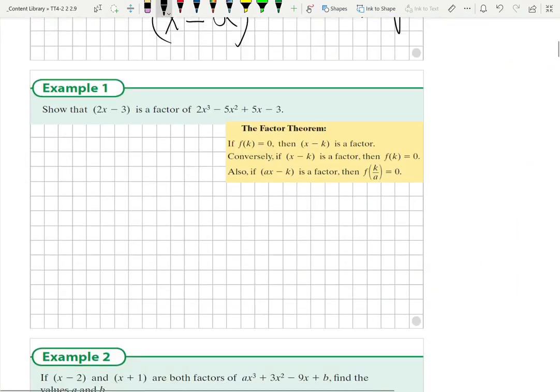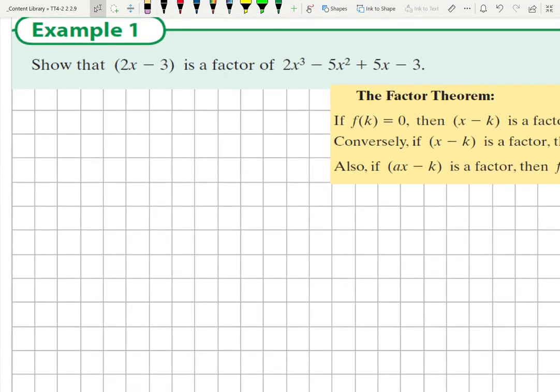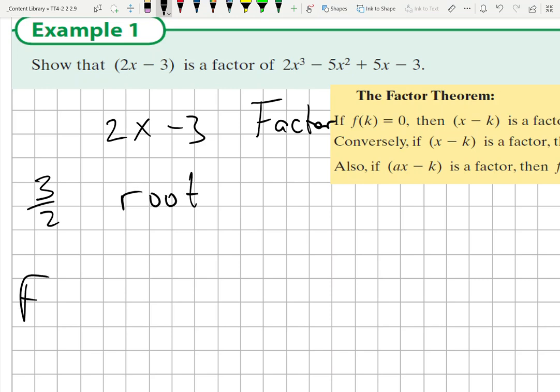They start off with a sort of tough example here. If 2x minus 3 - well, they're giving it, show that 2x minus 3 is the factor. Then 3 over 2 is the root, and we're going to prove it here by showing f of 3 over 2, and we'll get 0 equals 0.